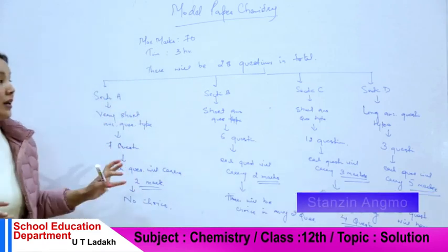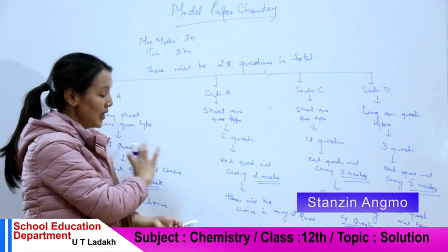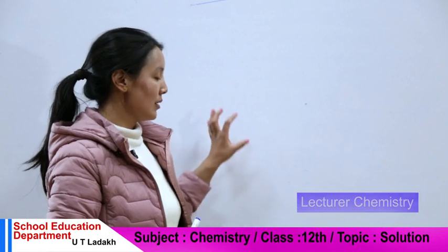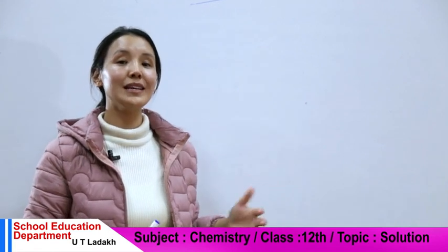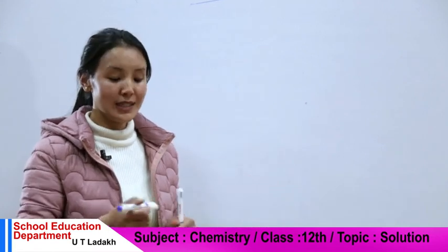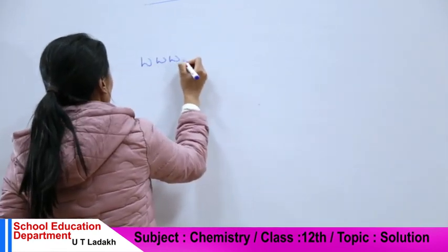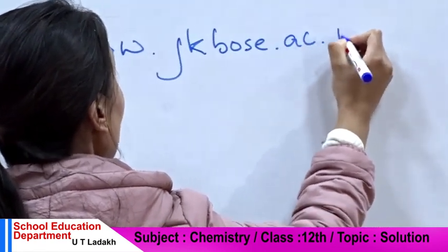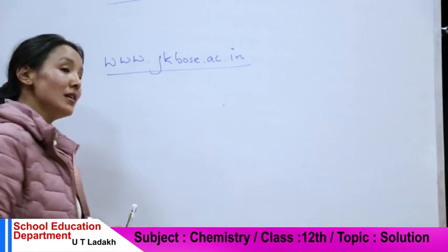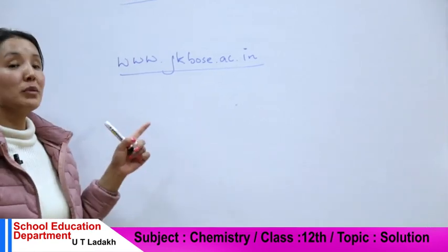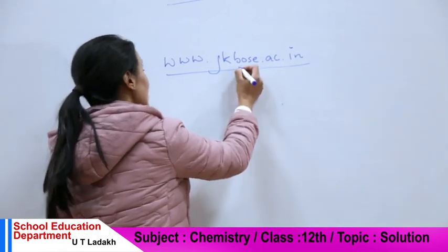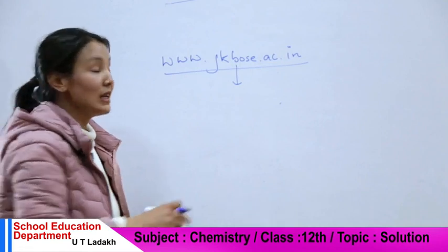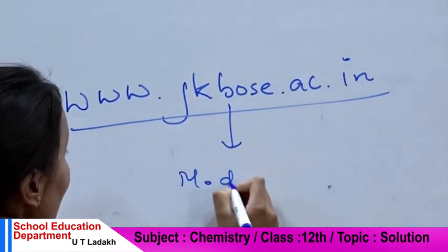Overall, the CBC pattern is a question — the chemistry type. So, if you have a model paper, you have to explain it. You have to see the JK Boss website. You have to see the model paper — this is the JK Boss website where you can see the model paper.